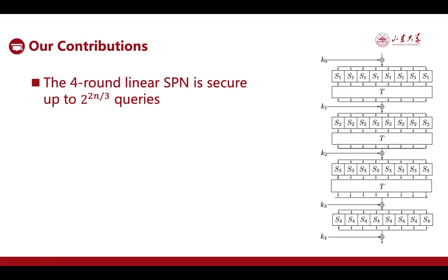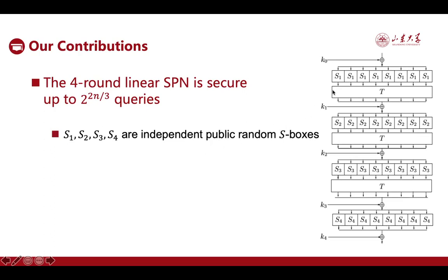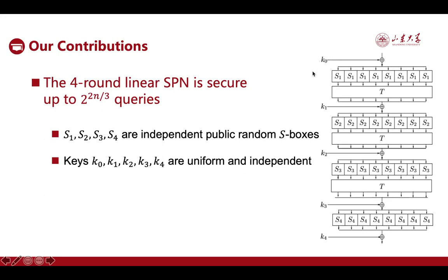In this paper, we proved that the full round SPN with a linear diffusion layer is secured up to 2^(2n/3) queries, beyond the birthday bound, where n is the size of the idealized S-boxes, as long as the full S-boxes S1, S2, S3, S4 used in the full rounds are independent public random permutations. The round keys K0 to K4 are uniform and independent, and the diffusion layer T is a linear permutation with some special combinatorial properties.